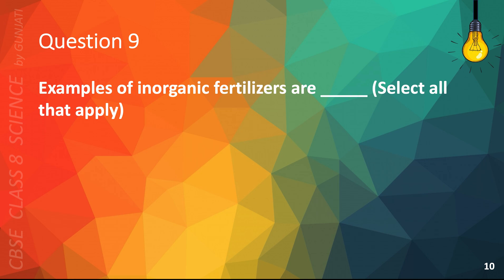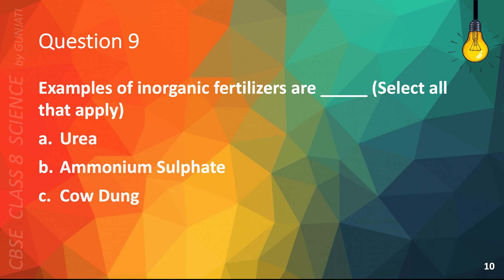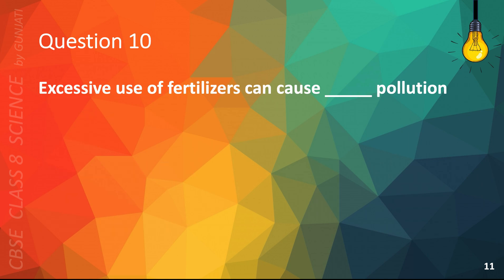Question 9. Examples of inorganic fertilizers are — select all that apply: A. Urea, B. Ammonium sulfate, C. Cowdung, or D. Carbon monoxide. The correct answer is A. Urea and B. Ammonium sulfate.